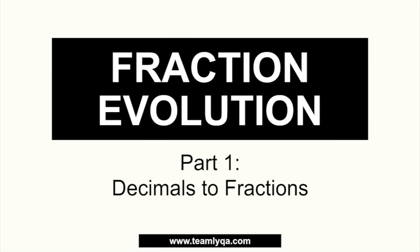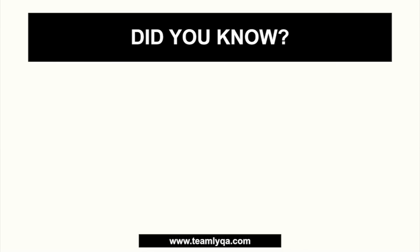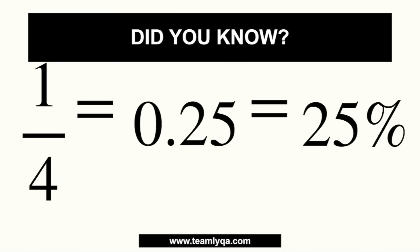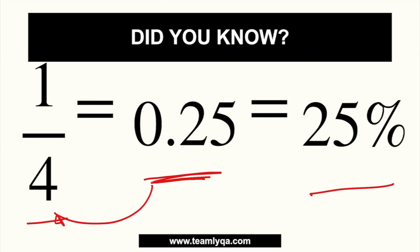This is our discussion on fraction evolution, Part 1 — turning decimals into fractions. Did you know that 1/4 is equal to 0.25, which in percentage form is 25%? That's the idea behind fraction evolution. The goal is for you to be at ease with different forms, so that if you see a decimal, you're not afraid because it's just a fraction, and if you see a fraction, it's okay because it's just a decimal. After a few years of doing this, I realized many people still haven't learned how to convert, so let's go back to basics.